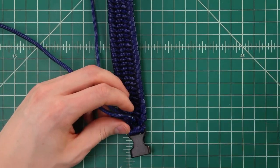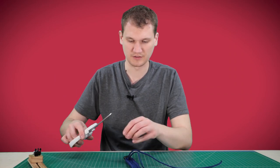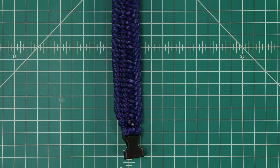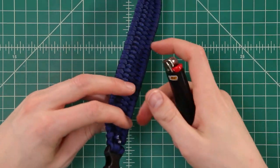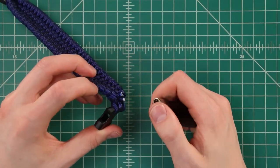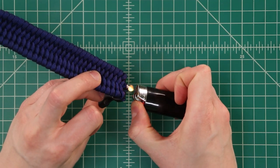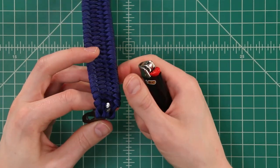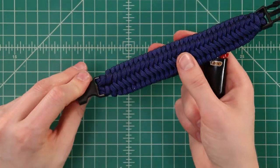Then on the bottom side we'll take our scissors and just cut them pretty close to the bracelet. Most of you guys know this drill by now and then we'll actually melt it with a lighter and just press it up against so that it makes a nice flat piece of plastic that isn't going to slip through.